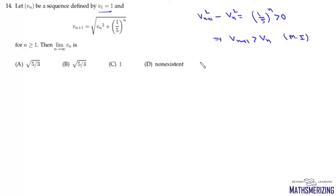Now we can write v₂² minus v₁² will be 1 by 5, v₃² minus v₂² is 1 upon 5 squared, and vₙ² minus vₙ₋₁² will be 1 upon 5 to the power n minus 1.